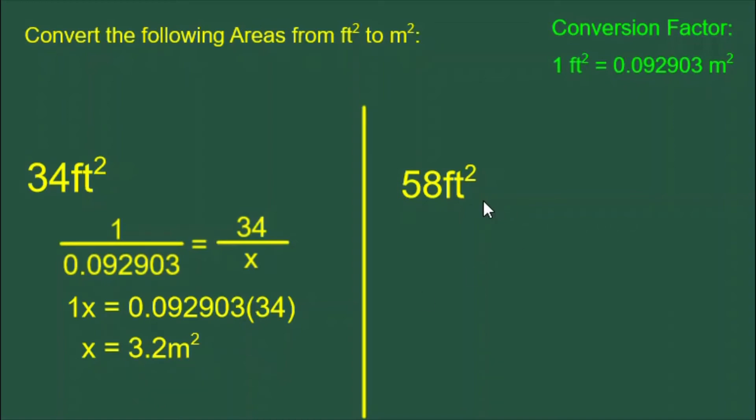With our second example, 58 feet squared, we do the same process. We make a proportion with the conversion factor on the left, and then we put the 58 on the right side on the top, because the feet squared is on the top on both sides.